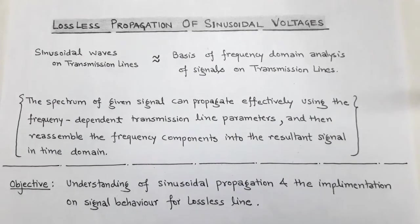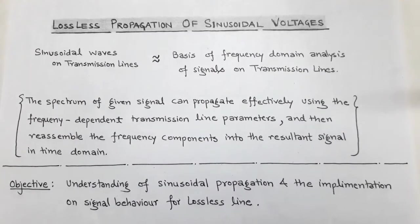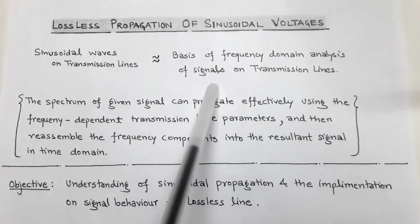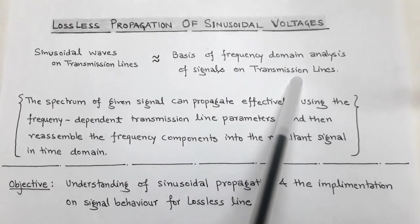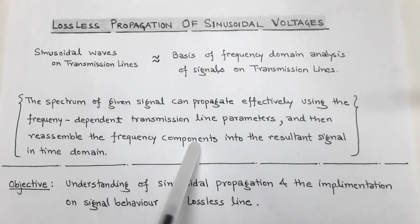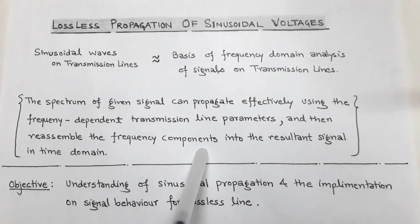The topic is lossless propagation of sinusoidal voltages. Here we talk about sinusoidal voltages in the form of an electromagnetic wave that propagates on a transmission line, and the propagation is lossless. Sinusoidal waves on transmission lines are based upon the frequency domain analysis of the signal. The signal can propagate more efficiently when it is in the frequency domain as compared to the time domain, so we consider a spectrum of the electromagnetic wave which can propagate more efficiently on a lossless transmission line.